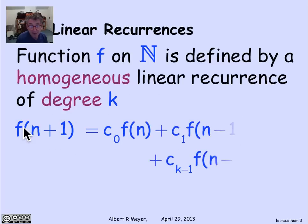If I was writing that out as a formula, f of n plus 1 is equal to some constant times f of n plus a constant times f of n minus 1 down through a constant times f of n minus k. So I have the previous k values here that are combined with constants. So it's a linear function of those k values to get the n plus first value. That's a homogeneous linear recurrence of degree k.